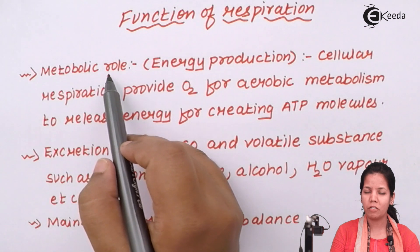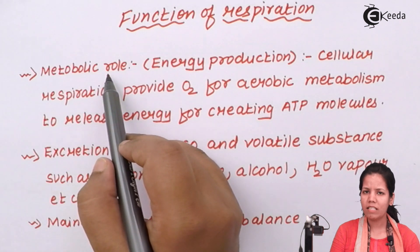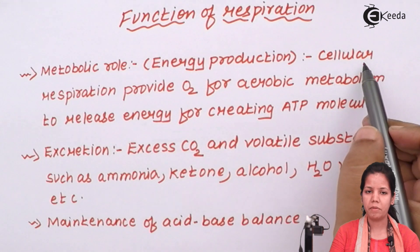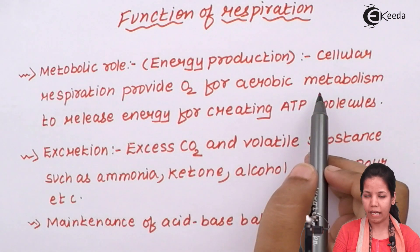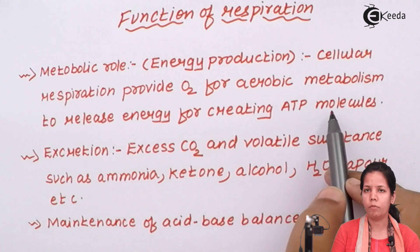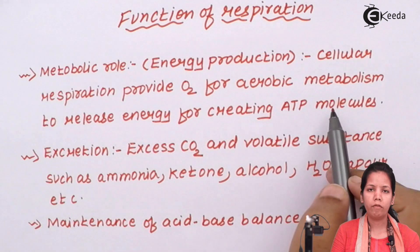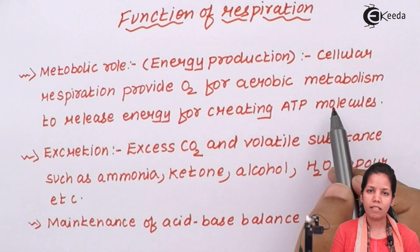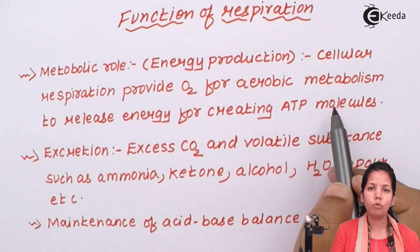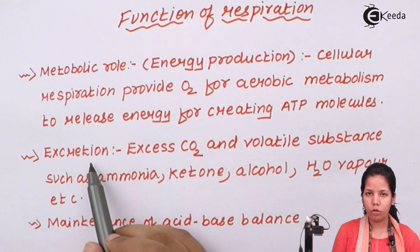The first role of respiration in the body is the metabolic role. Cellular respiration — respiration that takes place inside the cell — provides oxygen for aerobic or metabolic reactions, and these reactions release energy for creating ATP molecules. Whenever we eat food, it is broken down into glucose (C6H12O6), which is converted into ATP — adenosine triphosphate — in the presence of oxygen. This whole process takes place in mitochondrial cells, which is why it is called cellular respiration. Cellular respiration gives energy molecules ATP for cells to carry out their functions.